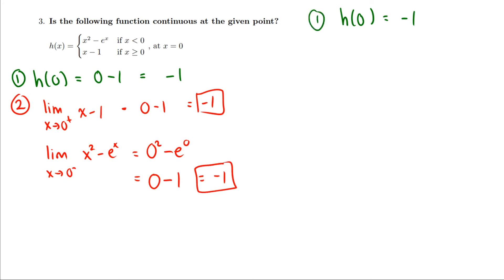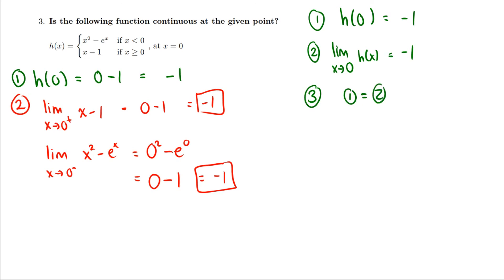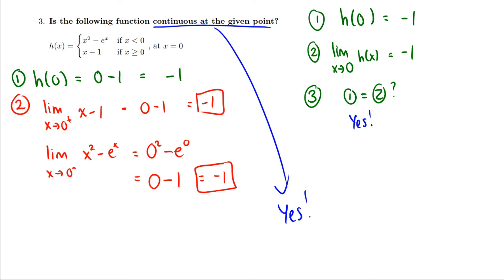Step one said h of zero equals negative one. Step two said the limit as x goes to zero of h of x equals negative one. Step three: is one equal to two? Yes, it is. Therefore, the function is continuous at the given point. h of zero is defined, the limit as x approaches zero of h of x is defined, and those two things are equal to each other. Therefore, this is continuous at x equals zero.